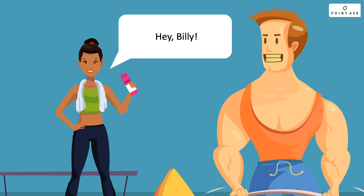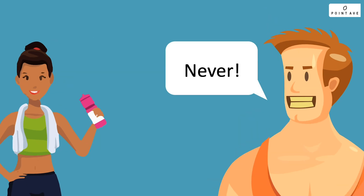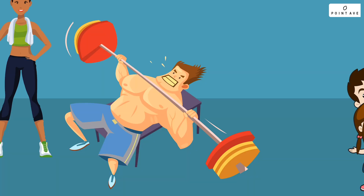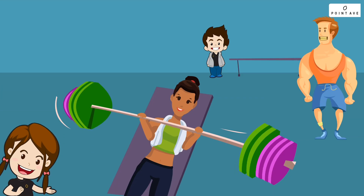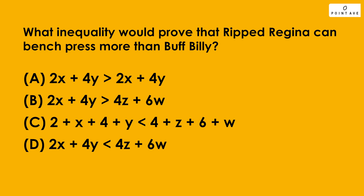Ruth Regina says she can bench press more weight than Buff Billy, and they want to test if she's right. Buff Billy can bench press a barbell with two weights that weigh x kilograms each and four weights that weigh y kilograms each. Ruth Regina can bench press a barbell with four weights that weigh z kilograms each and six weights that weigh w kilograms each. What inequality would prove that Ruth Regina can bench press more than Buff Billy?